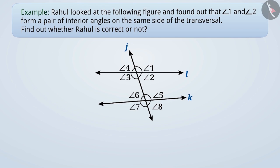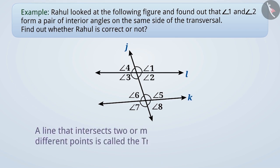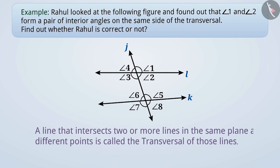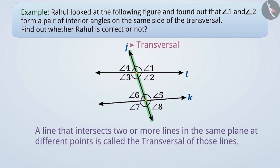In the previous video, we learned that a line that intersects two or more lines in the same plane at different points is called the transversal of those lines. Here, line J is intersecting line K and line L at different points. Therefore, it is a transversal.